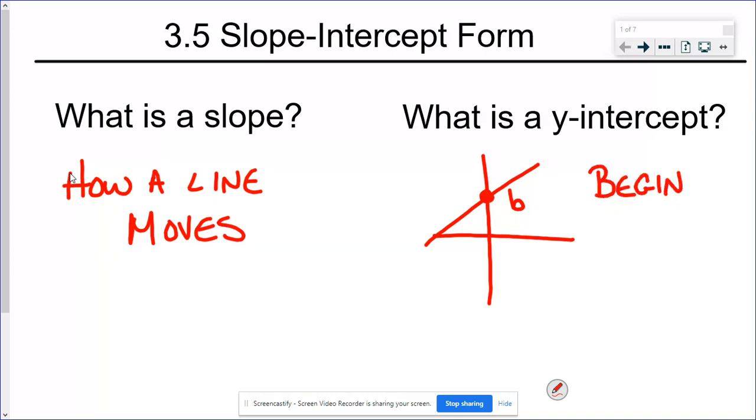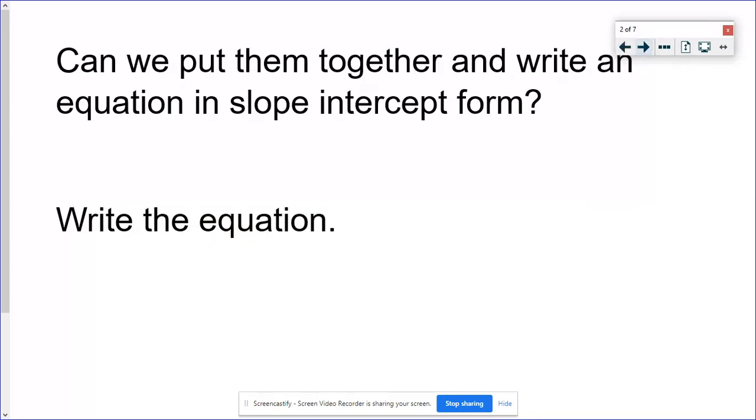So slope is how it moves. The y-intercept is where we begin. So when we put those two things together and we write the equation for slope intercept form it looks like this. Y equals mx plus b.